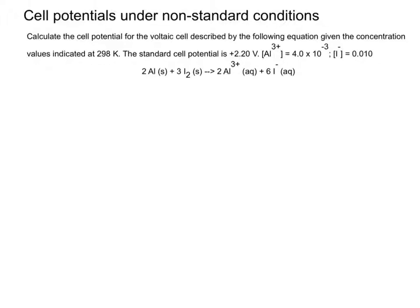But if I did not tell you it was non-standard conditions, what in the text of the problem would tell you that you need to use the Nernst equation? It gives you concentrations and the standard cell potential.